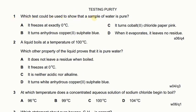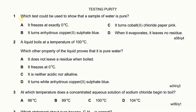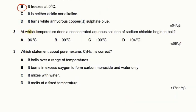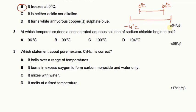Next we have testing purity. Which test could be used to show a sample of water is pure? There are only three ways to check purity: melting point, boiling point, and chromatography. Pure water freezes at exactly zero degrees Celsius. If you add an impurity, the freezing point decreases and the boiling point increases — so it may freeze at minus 4°C or boil at 104°C. A concentrated solution of sodium chloride has an impurity added. Impurity raises the boiling point and reduces the melting point. So the answer is D.